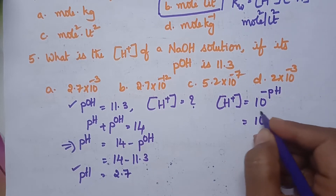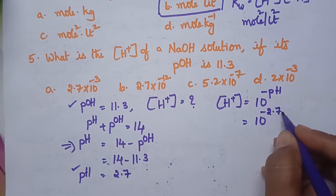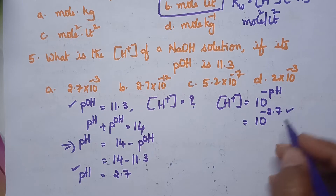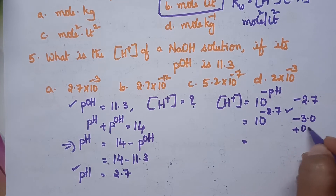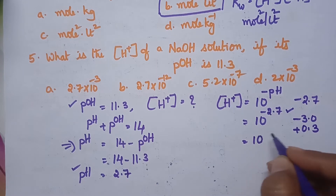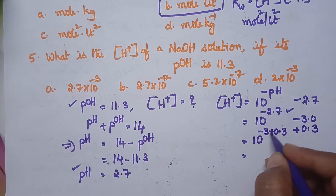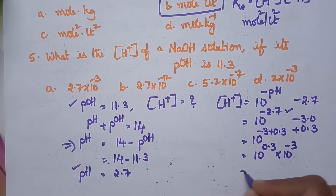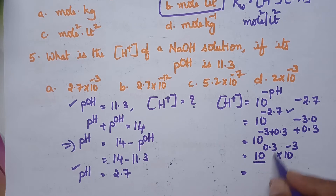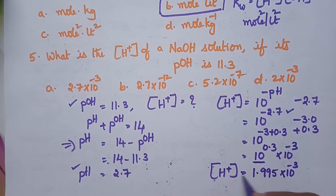To evaluate 10^(−2.7), we need to find the antilog. Since −2.7 must be expressed with a positive mantissa, we write it as −3 + 0.3, so 10^(−2.7) = 10^(0.3) × 10^(−3). The antilog of 10^(0.3) is 1.995, and hence the H⁺ ion concentration for the given solution is equal to 1.995 × 10^(−3).